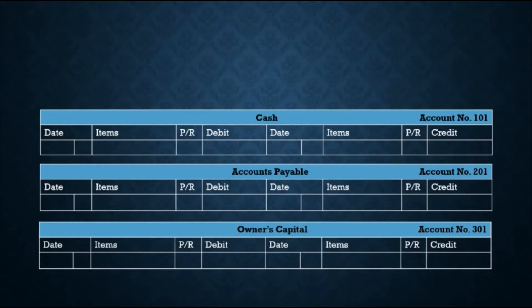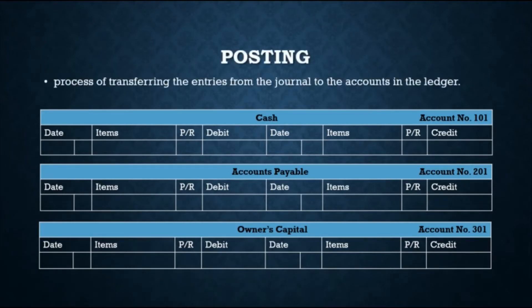The procedure of transferring journal entries to the ledger accounts is called posting. This step accumulates the effects of journalized transactions into individual accounts.